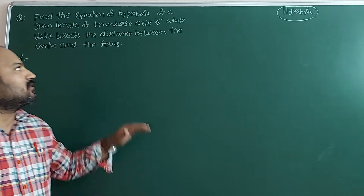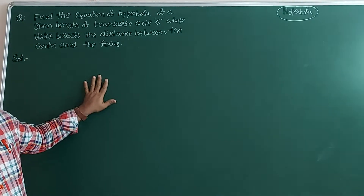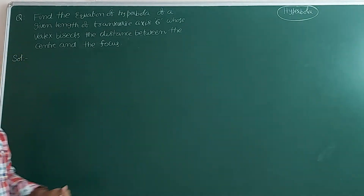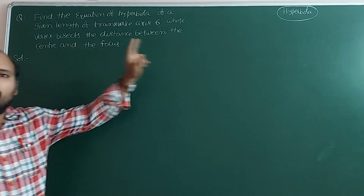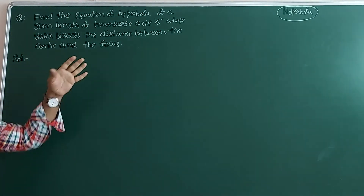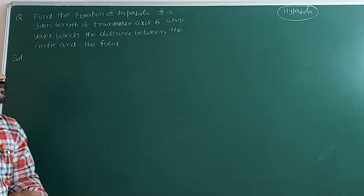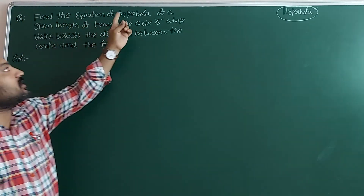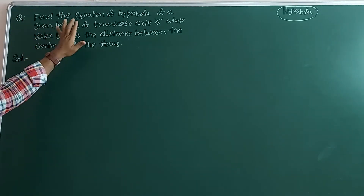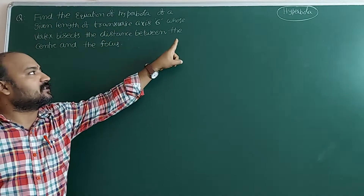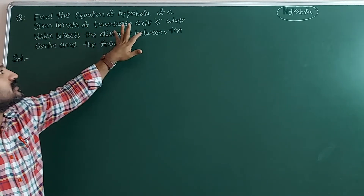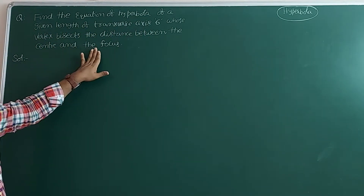Hi dear students, one of the students requested to do this term, so that is the reason I am doing it here. It is from hyperbola, one of the four most important questions. According to the question, if you draw the figure, it is easy to do. Find the equation of hyperbola of a given length of transverse axis 6, whose vertex bisects the distance between the center and the focus.